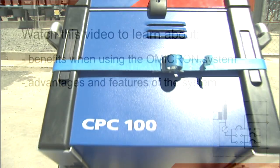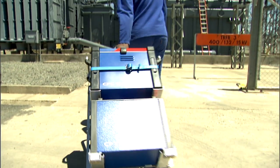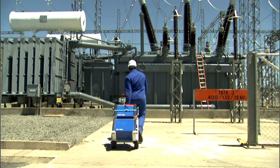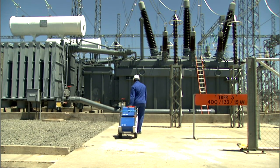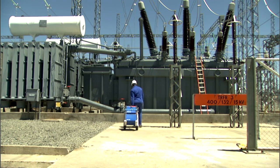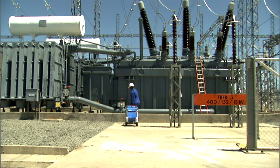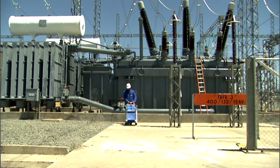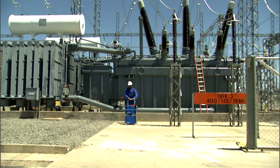The Omicron CPC100 and CPTD1 is a system providing an extensive range of transformer testing. It contains a power amplifier which can output test signals in a frequency range of 15 to 400 Hz.